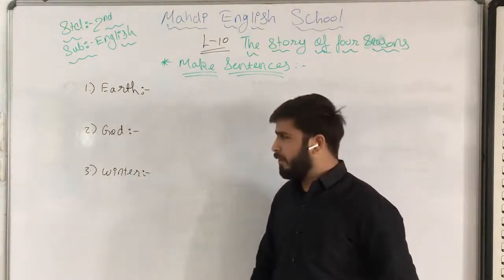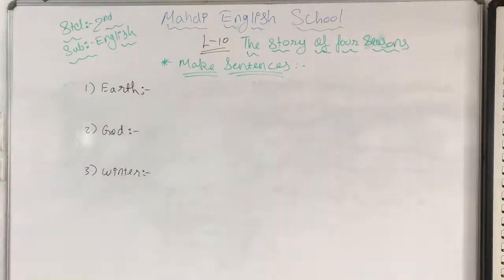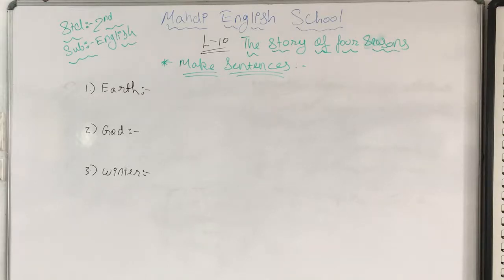I am going to write the answer on the board. I hope that you have started thinking about the sentences on your own, not taking help from anyone else. What can you make the sentence on — earth, God, winter? These are very easy and regular words we have heard and used. It should be very easy for you to make sentences on these easy words.